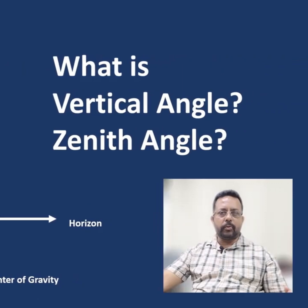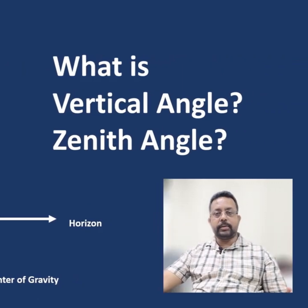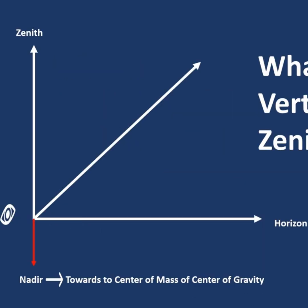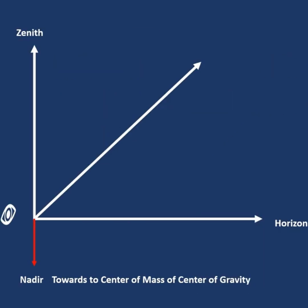Today we are going to talk about what is a vertical angle and what is a zenith angle. On screen I have a horizon, a zenith which is directly above, and nadir which is directly towards the center of mass or center of gravity.